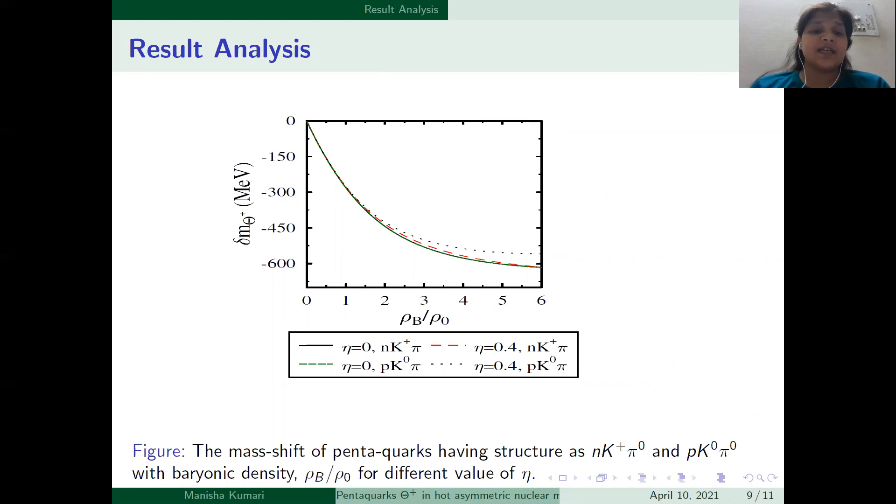In the figure, we've observed that in asymmetric nuclear matter, the mass shift of pentaquark is same for both nK plus pi zero and pK0 pi zero structure with baryonic density. There is no measurable change in mass shift of pentaquarks at low density in asymmetric matter.